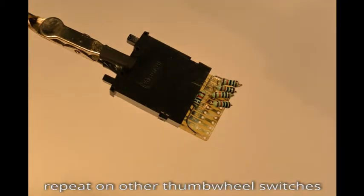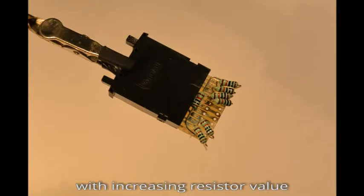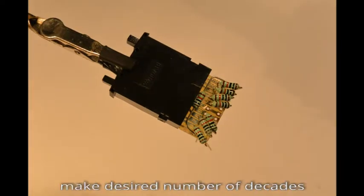Repeat with 100 ohm resistors on another thumb wheel, and with increasing resistor value, continue for the desired number of decades.